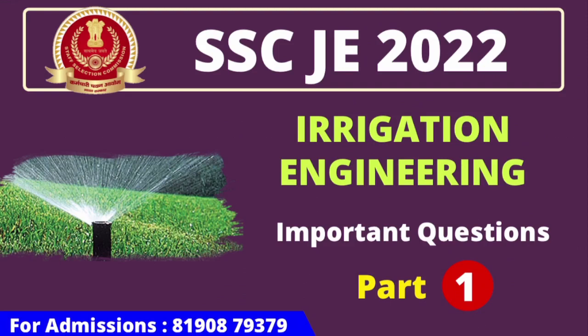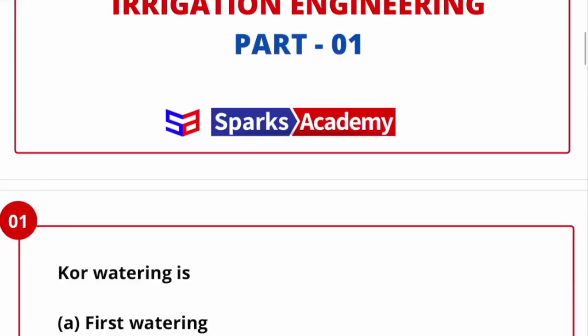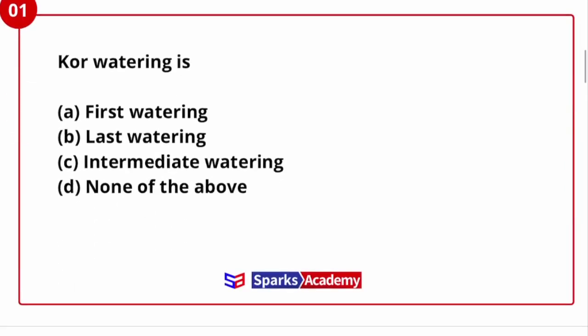We have top MCQs and expected MCQs. The first question is about core watering. Core watering, first watering, last watering, intermediate watering — core watering is nothing but the first watering given to the crop when it is a few centimetres high. That is, when a particular crop has grown a few centimetres, you can say the first watering is core watering.